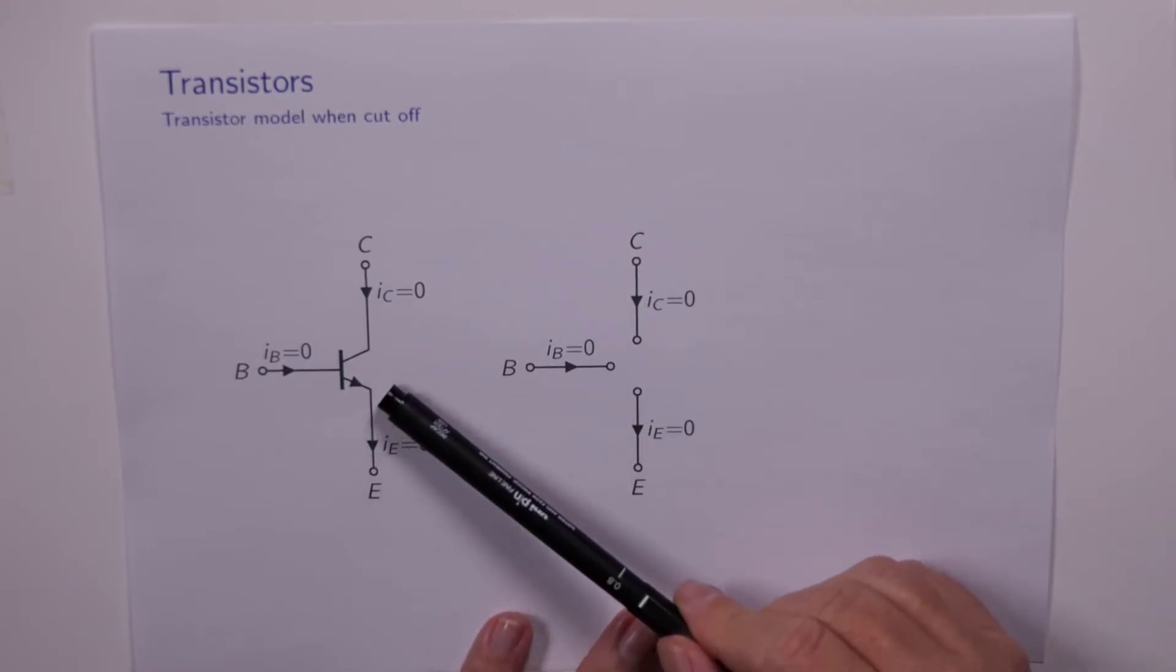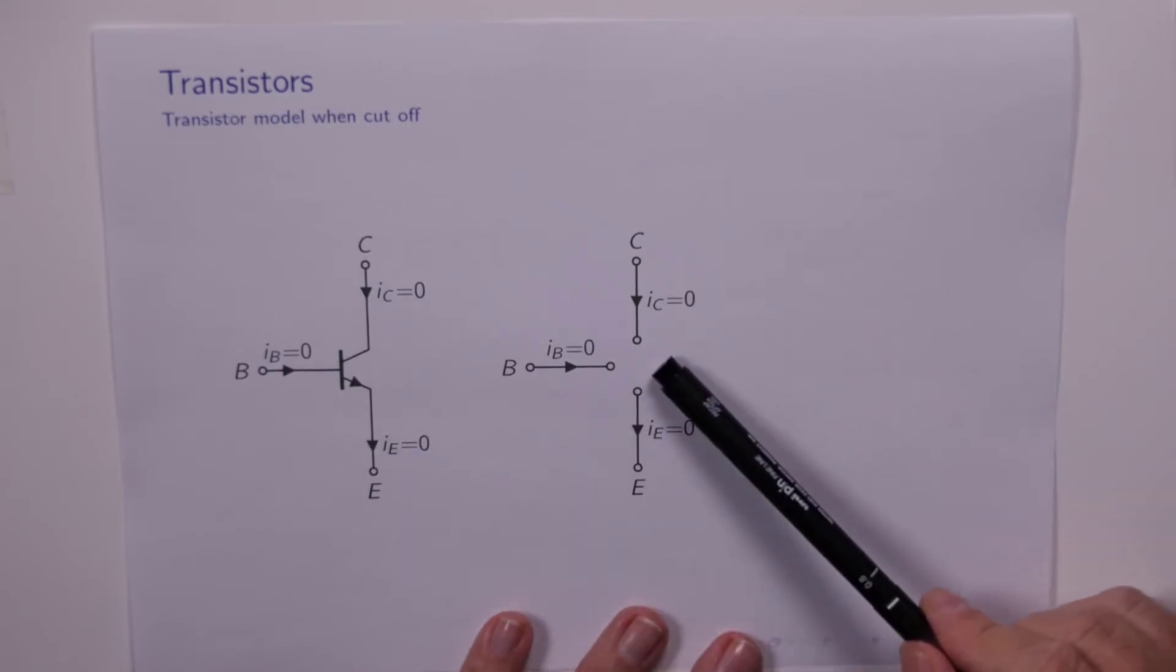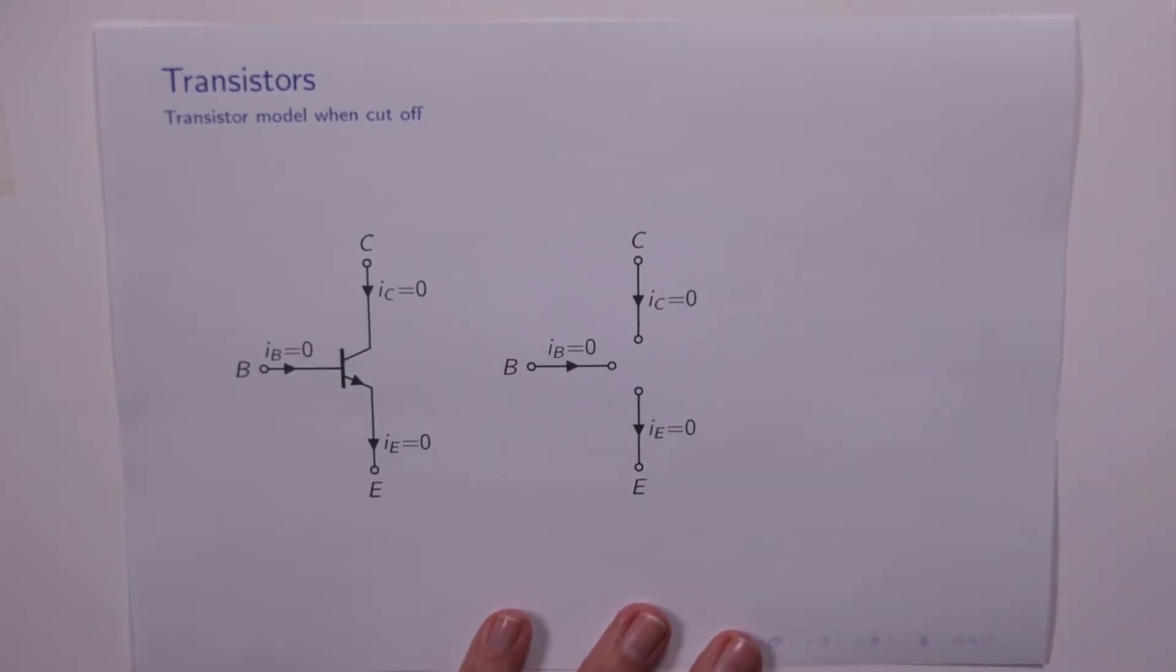So if you know the transistor is in cutoff, then you can effectively just remove the transistor from the circuit and replace it with this equivalent. Couldn't be simpler.